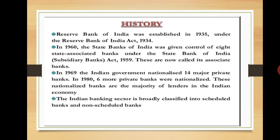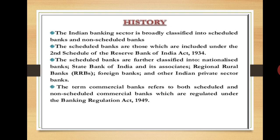These nationalized banks were the majority of lenders in the Indian economy. The Indian banking sector is broadly classified into scheduled banks and non-scheduled banks. Scheduled banks are those included under the second schedule of the RBI Act 1934. Scheduled banks are further classified into nationalized banks, State Bank of India and its associates, regional rural banks, foreign banks, and other Indian private sector banks. The term commercial banks refers to both scheduled and non-scheduled commercial banks, regulated under the Banking Regulation Act 1949.